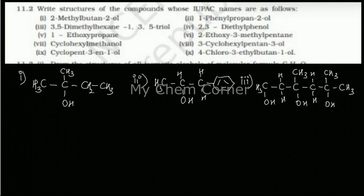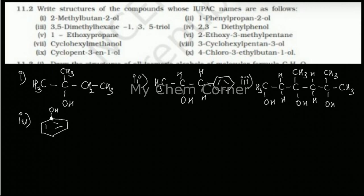The fourth one is 2,3-diethylphenol. Here the parent hydrocarbon is phenol, which is a benzene ring with an OH group. It says 2,3-diethyl, so this is the first carbon bonded to OH; either clockwise or anticlockwise, put an ethyl group at position 2 and another ethyl group at position 3. That is your fourth structure.